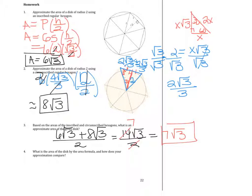Number 4, what is the area of the disk by the area formula, and how does your approximation compare? We know that the circle area formula is pi r squared, which equals 4 pi. If you approximate that, you get 12.56. If you put in your calculator 7 radical 3, that's approximately 12.12, so it's really close.